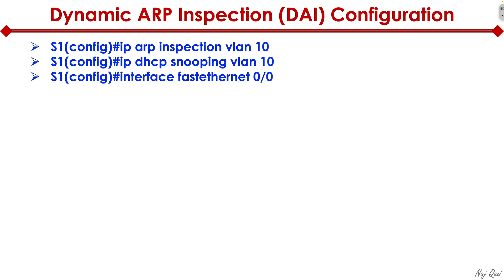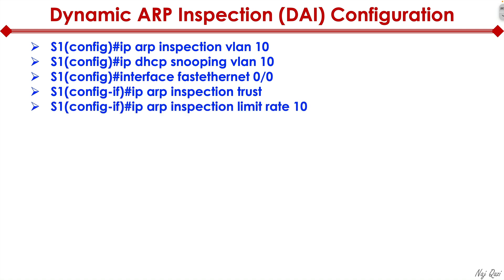Then we go to the interface — for example, 'interface FastEthernet 0/0' or gigabit ethernet. Under interface config mode, type 'ip arp inspection trust' if we know a legitimate device is connected to that port. For an untrusted access port where we don't know who will plug in, type 'ip arp inspection limit rate 10', which limits ARP packets to 10 per second.